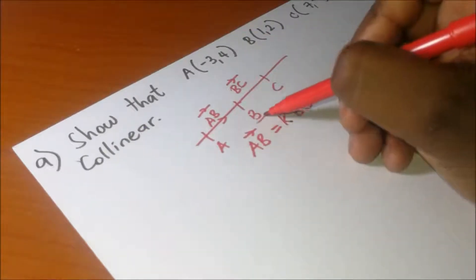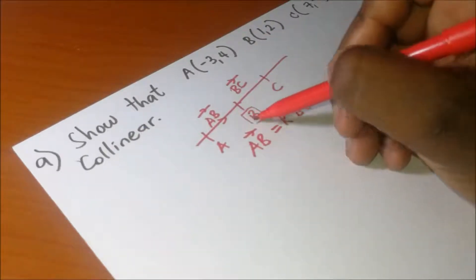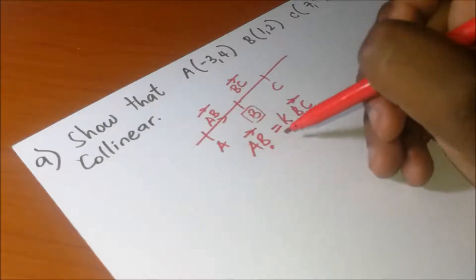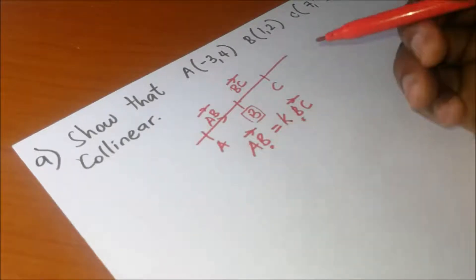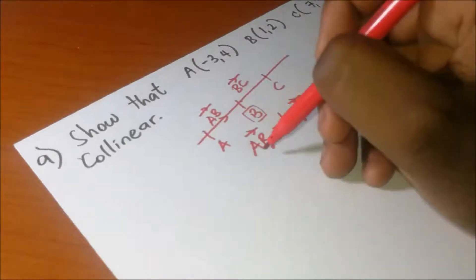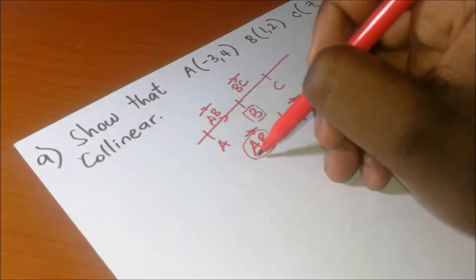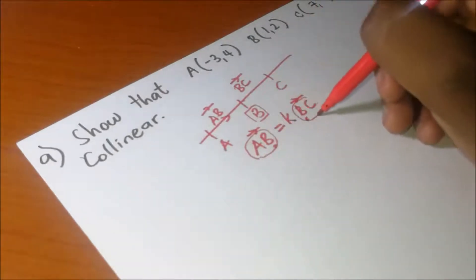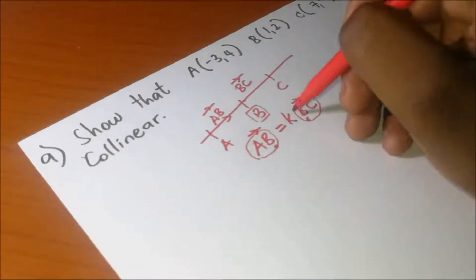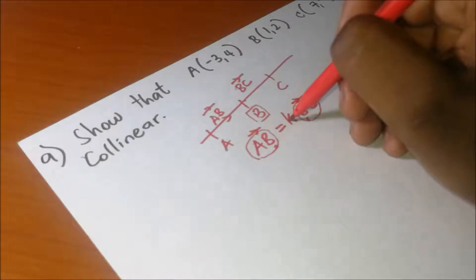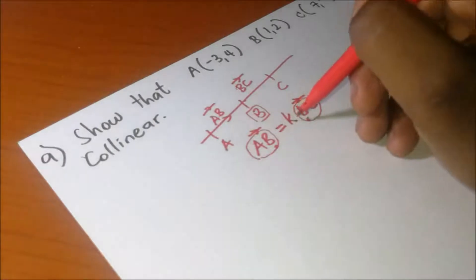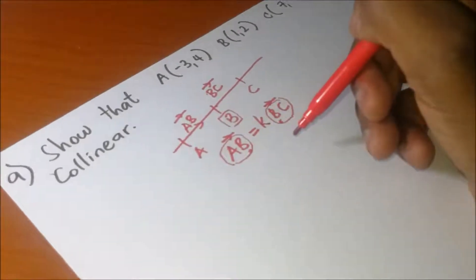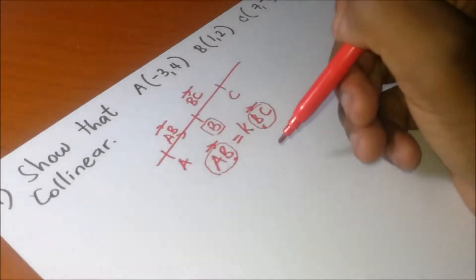The second condition satisfied is that they share a common point B. So the plan is: we are first going to find AB, then find BC, then find the value of k, and we will be able to conclude if everything adds up.